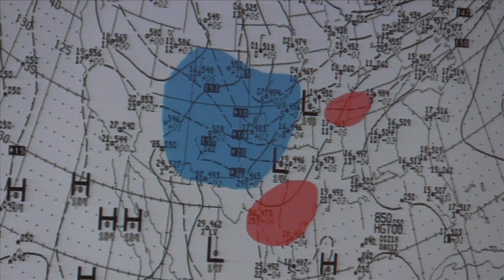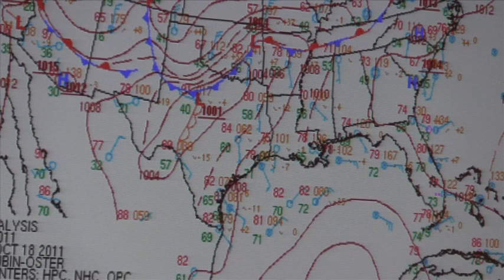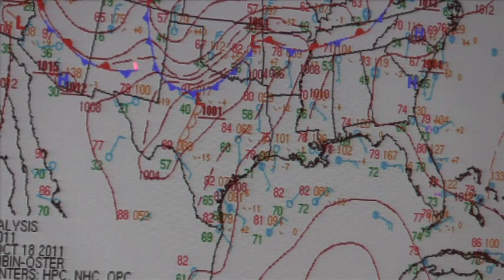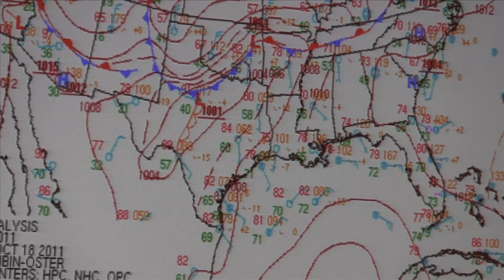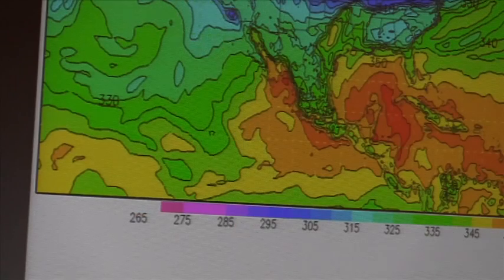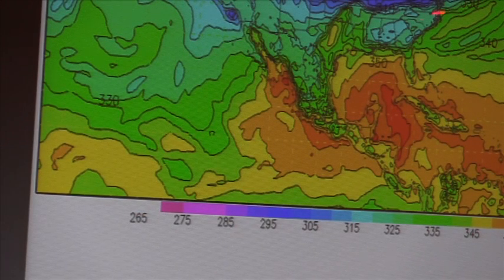On the 0Z surface chart, HPC has analyzed a cold front with a low stamped in Oklahoma, and a stationary boundary that drapes off into the northeast. On the 0Z theta-e chart, you can see the boundaries are pretty well defined as well.